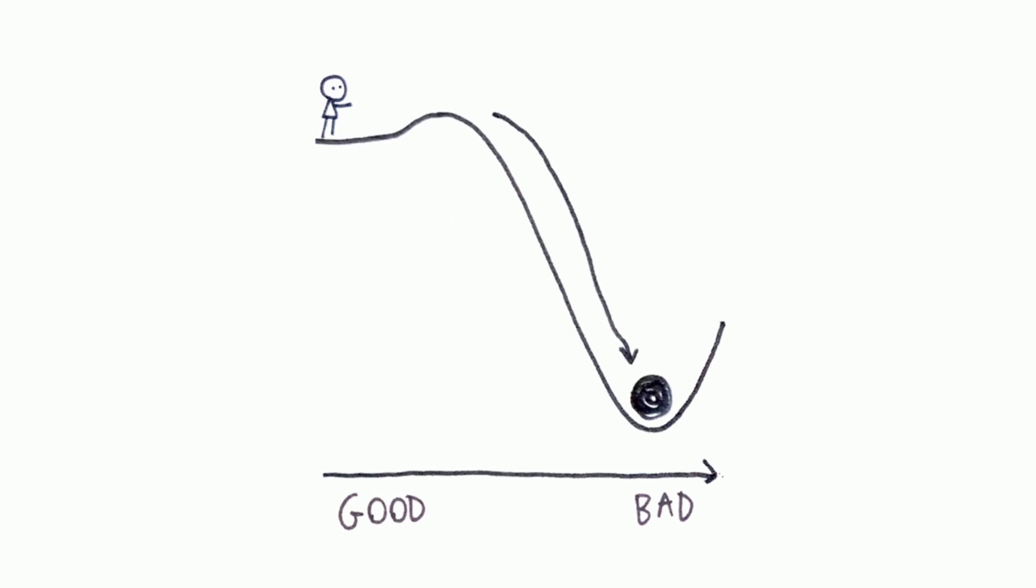The ball will quickly roll down the reinforcing loop, the mountain, and into the balancing loop, the valley, the attractor, the valley of death.